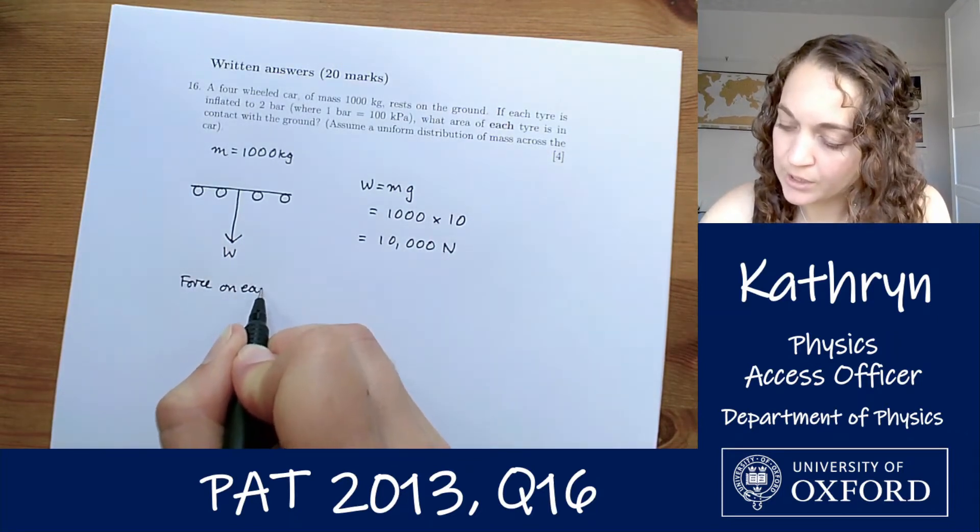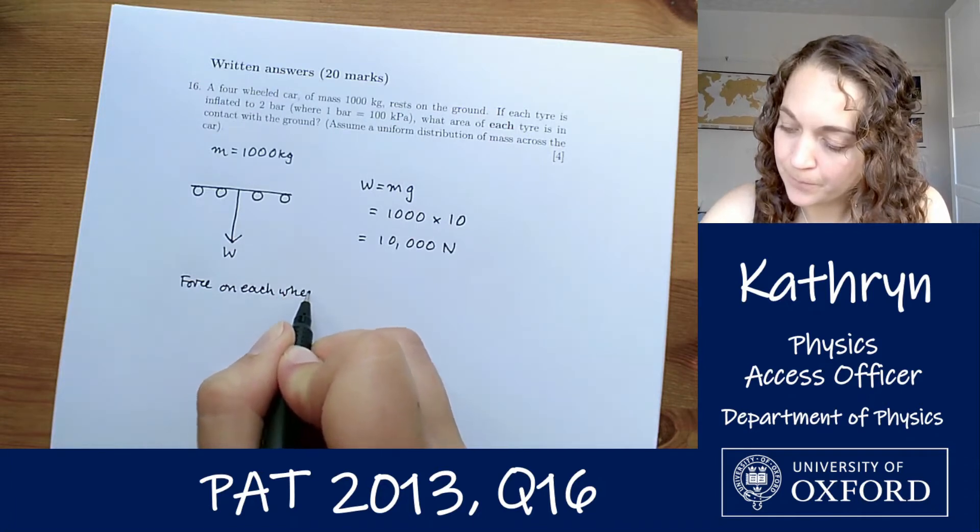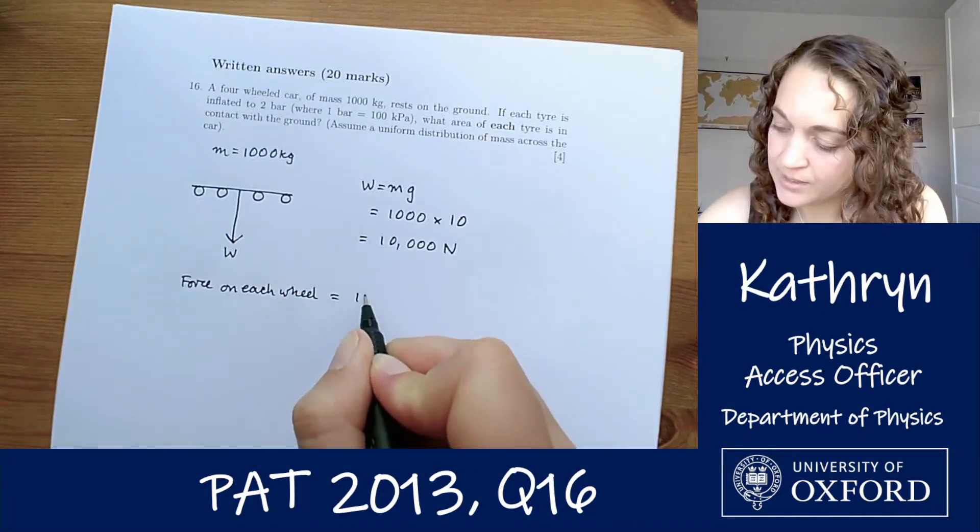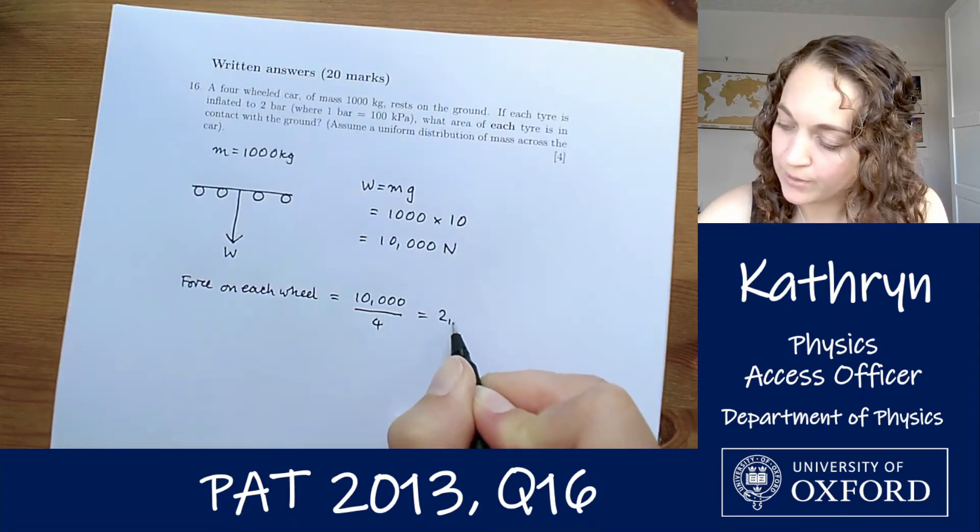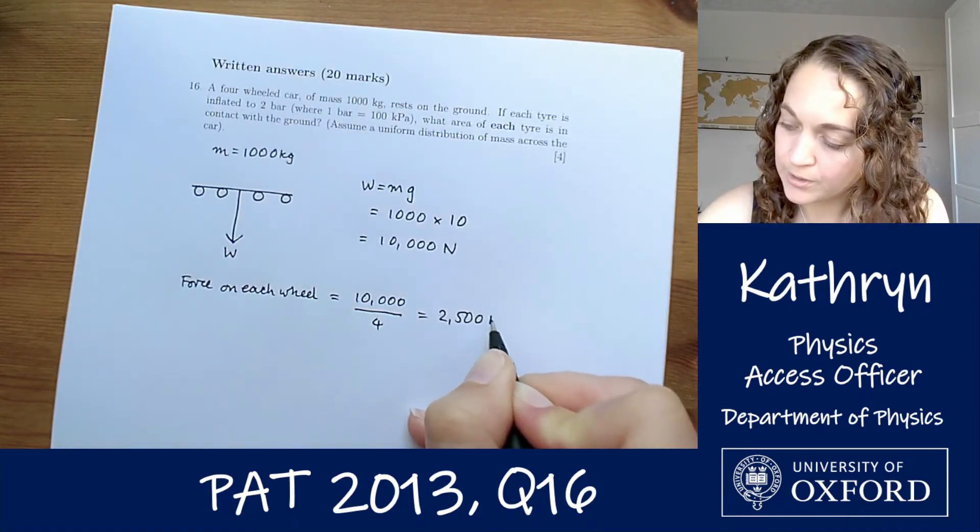So the force on each wheel is going to be 10,000 divided by four, which is 2,500 newtons.